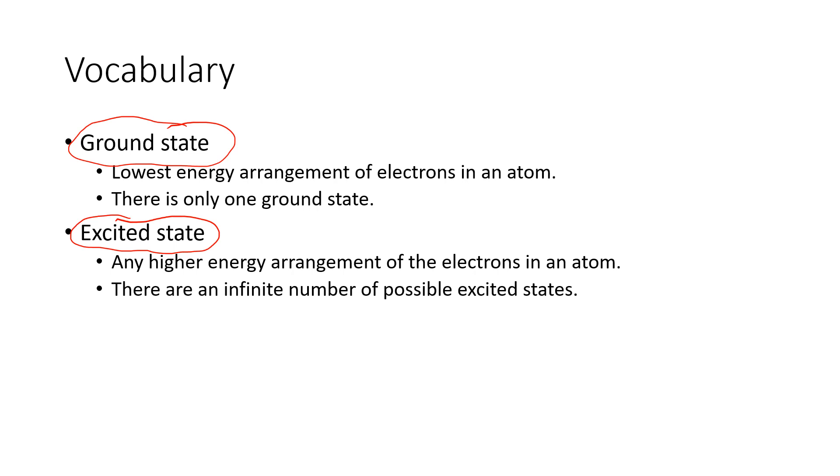And there is literally an infinity of possible excited states because there's an infinite number of energy levels potentially available. And if you have multiple electrons, they can be in all sorts of different possible arrangements. So there's only one ground state, but there are many different excited states.